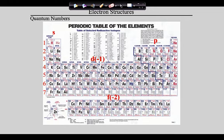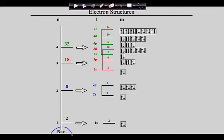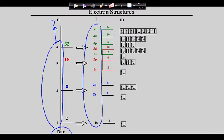Welcome back. Now that you have a sense of how the periodic table is put together, what does all of this mean? Electrons organize themselves around the nucleus of the atom in ordered and repeated ways. The energy levels range from one to seven, though you're only accountable for the first four. These energy levels are broken into sublevels labeled S, P, D, and F.